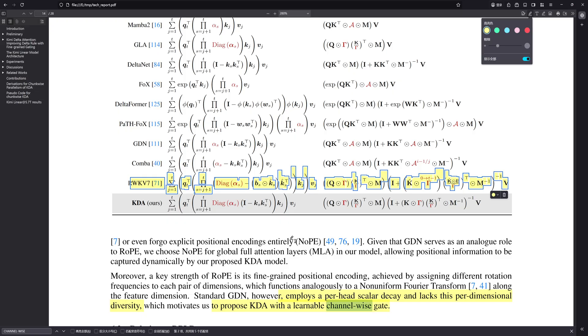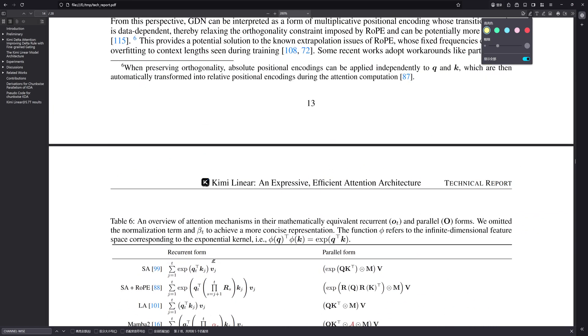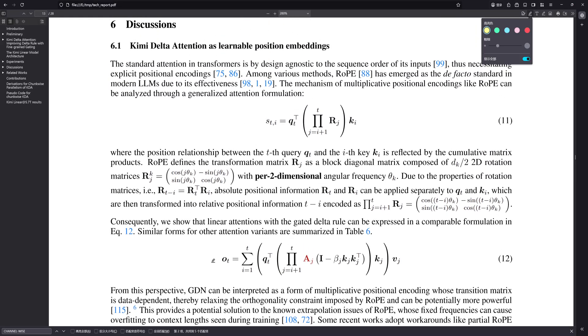Second, the efficiency aspect is just staggering. The custom KDA kernel is nearly twice as fast as the generalized DPLR formulation it's based on. That level of hardware-specific optimization suggests that brilliant engineering and circumventing hardware limits are just as responsible for the final result, perhaps even more so than the inherent expressive power of KDA alone.